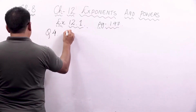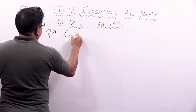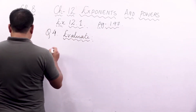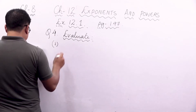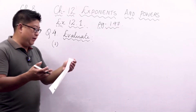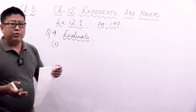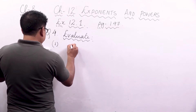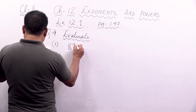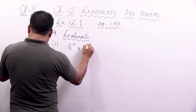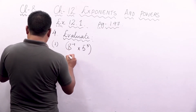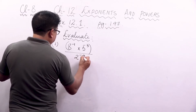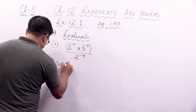Let's start with question number 4. The question is: evaluate. Evaluate simply means to find the values — to solve, to simplify and find the value. The first question is: 8 to the power minus 1 into 5 to the power 3, the whole divided by 2 to the power minus 4.